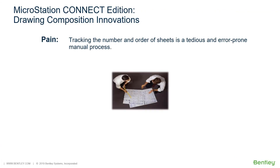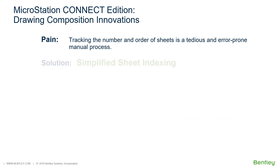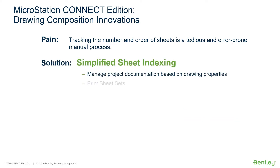When working with sheets, tracking and ordering can be a tedious and error-prone manual process. Thankfully, with the new innovations found in the MicroStation Connect Edition's Documentation Center, the solution is simplified sheet indexing, where from the Sheet Index tab of the Explorer you can perform sheet indexing tasks.